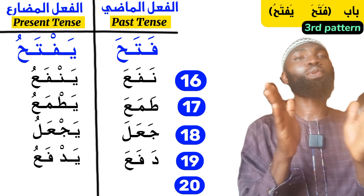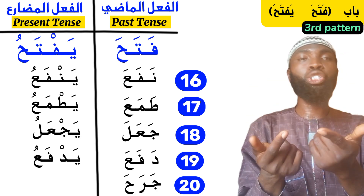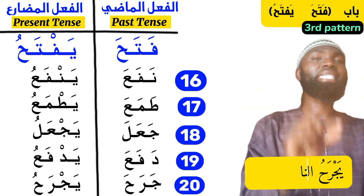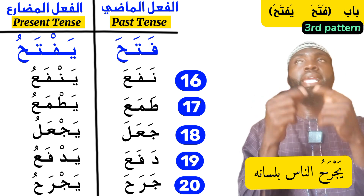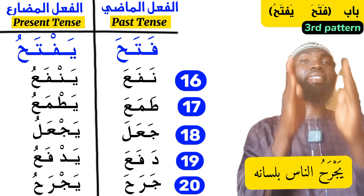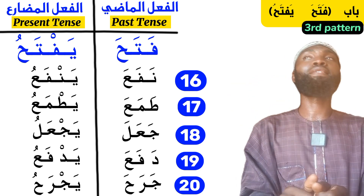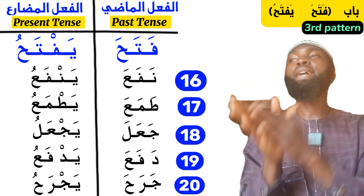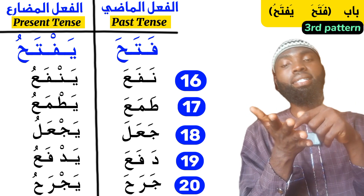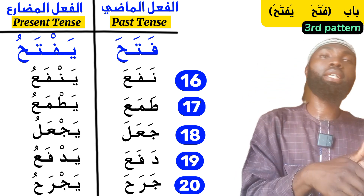The last word to complete the 20 words promised at the beginning of the video is jaroha — 'to cause injury, to cause harm.' The present tense is yajrahu. An example: yajrahu an-nas bilisanih — 'He hurts people with his tongue.' So all 20 words brought in this video fall under the category of fataha yaftahu. What is exclusive to this pattern is that in the present tense, the second letter maintains the fatah, unlike the two previous patterns where it changes to kasra or damma.